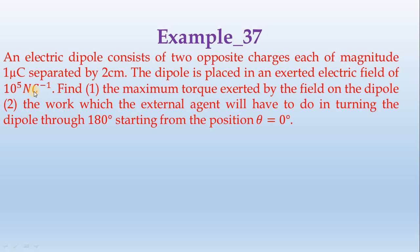Then the work which the external agent will have to do in turning the dipole through 180 degrees. Starting position angle 0, final angle 180 degrees, and the dipole turns. Where is the external work?